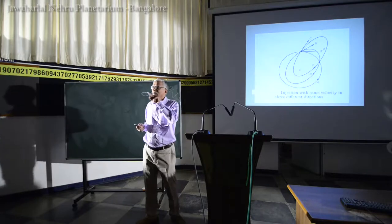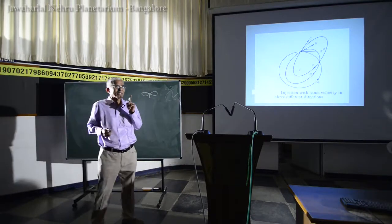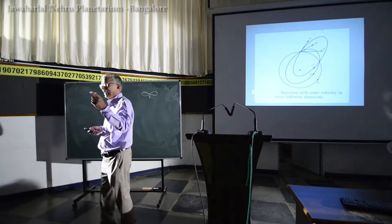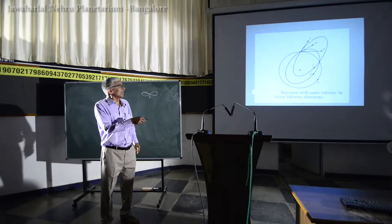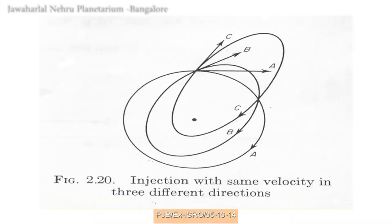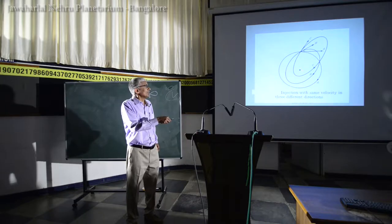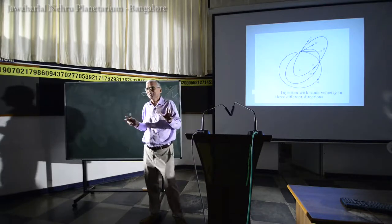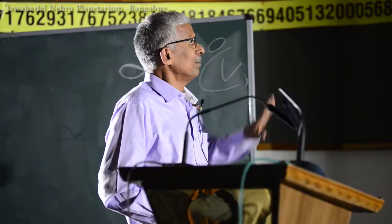Velocity is a vector — it has magnitude and direction. The same speed given in different directions produces different orbits. If you give 5.59 km/s in a particular direction, you get a circular orbit; the same speed in a different direction gives a different elliptical orbit. The position of Earth changes with respect to the orbit shape, meaning the semi-major axis changes, though all remain in the same plane.